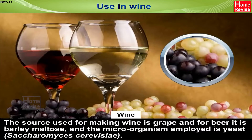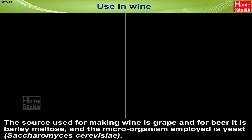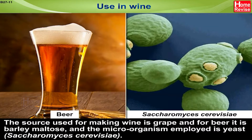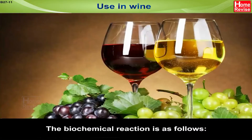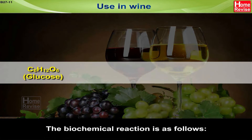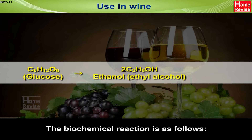The source used for making wine is grape, and for beer it is barley maltose. The microorganism employed is yeast, or Saccharomyces cerevisiae. The biochemical reaction is as follows: C6H12O6 (glucose) gives 2C2H5OH (ethanol or ethyl alcohol) plus CO2.